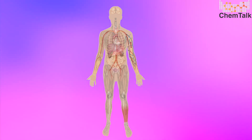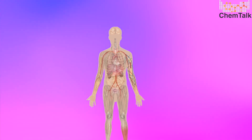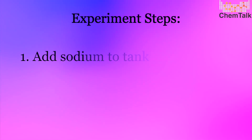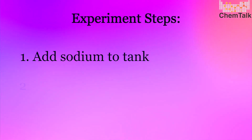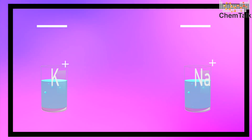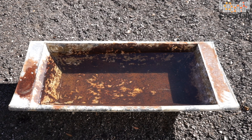Now that we know more about the history of potassium and how it interacts with our bodies, let's witness how pure potassium interacts with nature through an exciting experiment. We perform two major steps: first, we add a few samples of sodium into a tank filled with water and observe its reaction; second, we add a few samples of potassium into both a tank and a frying pan filled with water. After this experiment, we will compare the reactivity of sodium versus potassium in water and investigate the scientific mechanisms at play. Since potassium and sodium are highly reactive and dangerous metals, please do not try this experiment at home.